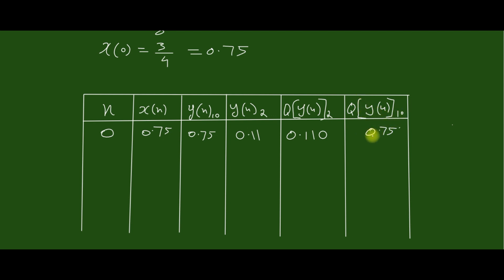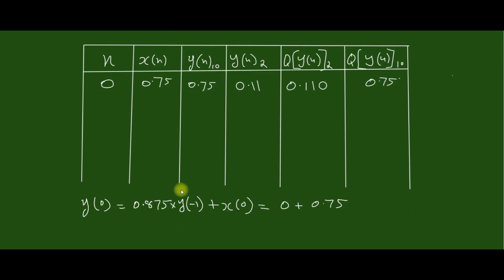When n = 0, you can compute y(n). Substituting n = 0, we get y(0) = 0.875·y(-1) + x(0), where y(-1) = 0, which is given in the question. Then x(0) = 0.75. Substituting, we get the value of 0.75, so y(n) decimal is 0.75.